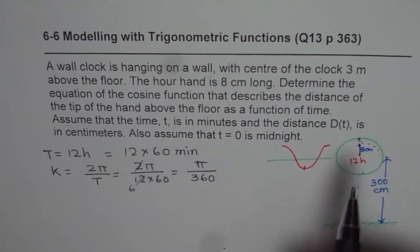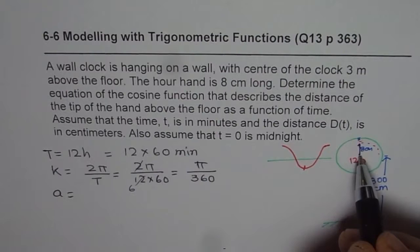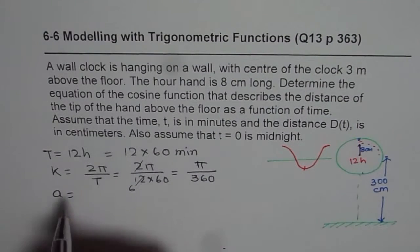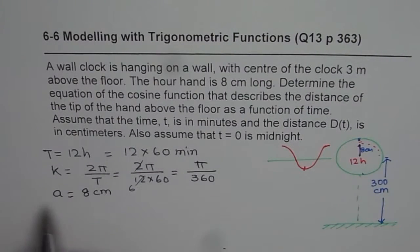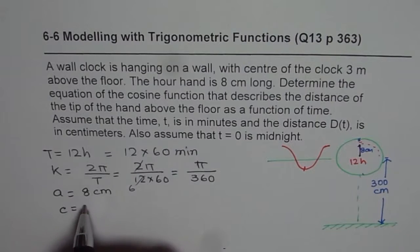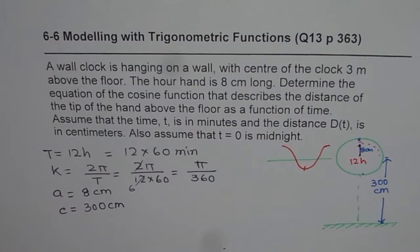Now amplitude a is going to be the length of the needle, the hour hand, which is 8 centimeters. And the value of c is 300 centimeters. Now you will be wondering, what is c, what is a?